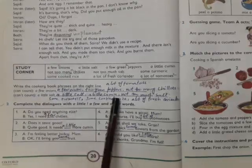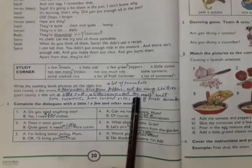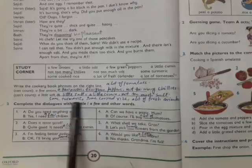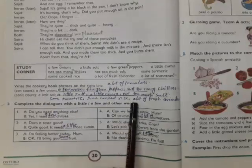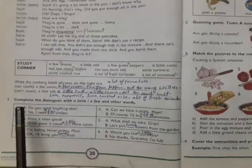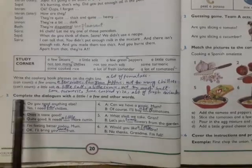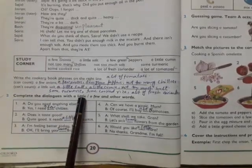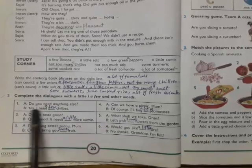And the things which we can't count: a little salt, a little cumin, not too much salt, some turmeric, some cooked rice, and a lot of fresh coriander. These things we can't count. In the next question you have to complete the dialogues with two words, a little and a few and some other words.